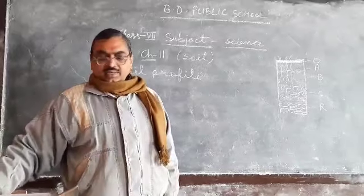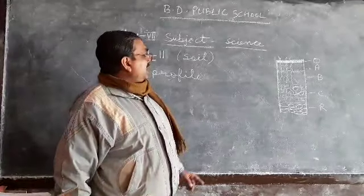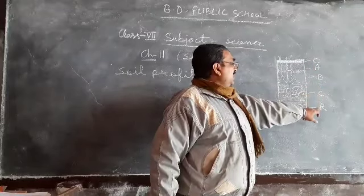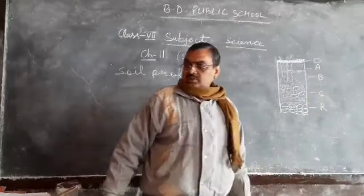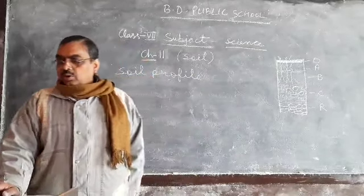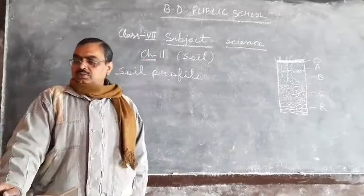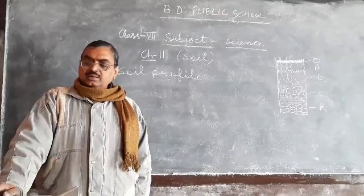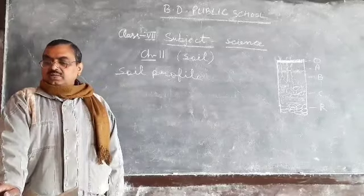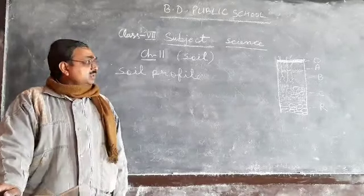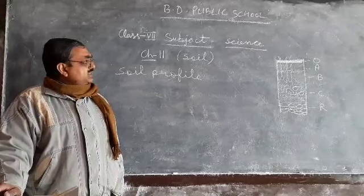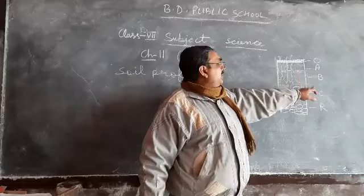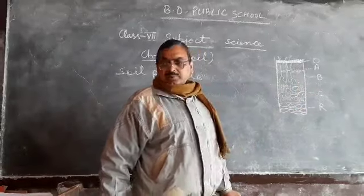The horizons are known by the English letters O, A, B, C, and R. These are the different horizons of the soil. The main ones are A, B, and C — jo region A, B aur C hota hai, yahi hamare liye mahatvapurn hain.